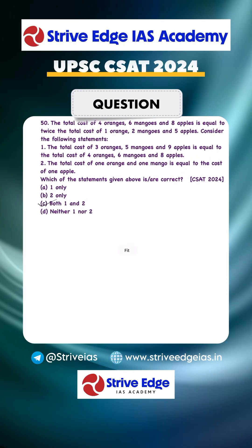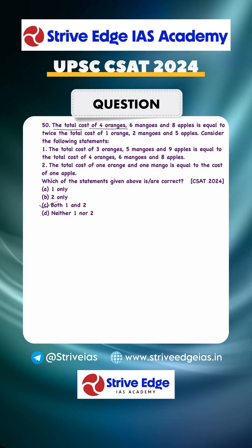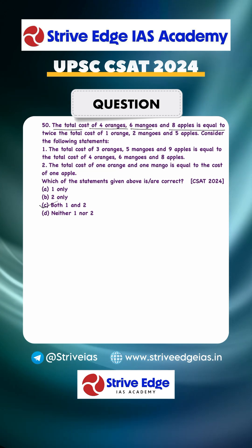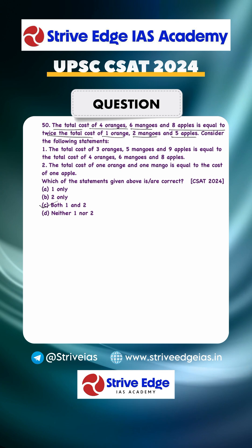Dear student, this is a question asked in CESA 2024. The total cost of 4 oranges, 6 mangoes, and 8 apples equals twice the cost of 1 orange, 2 mangoes, and 5 apples. Consider the following statements.